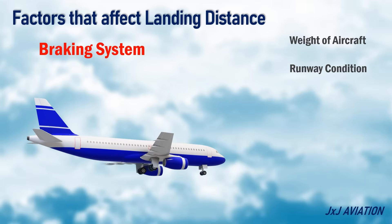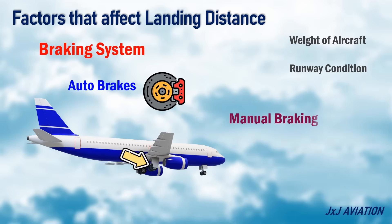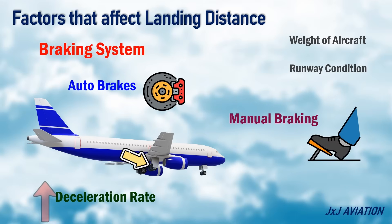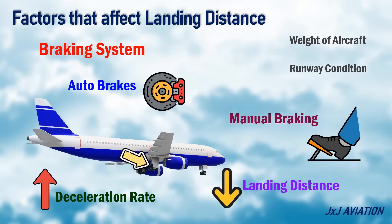Braking System. The aircraft may have different braking modes installed, that can be categorized as auto brakes and manual braking. The deceleration rate is highest with manual braking, so the distance is shortest with this braking mode.